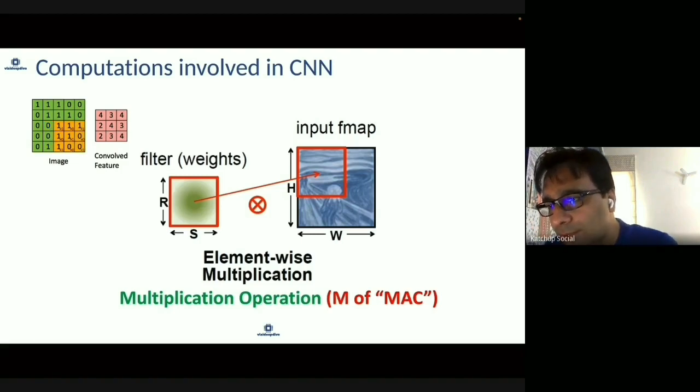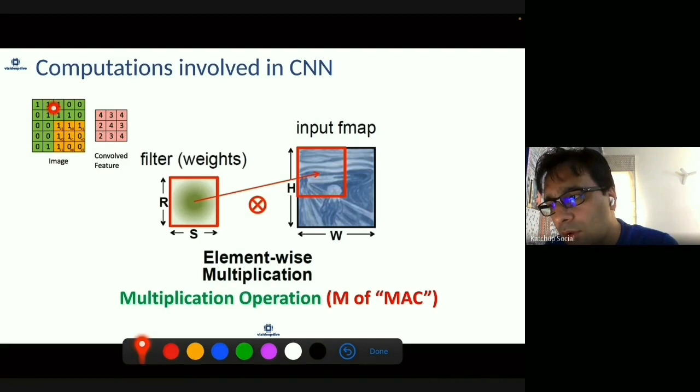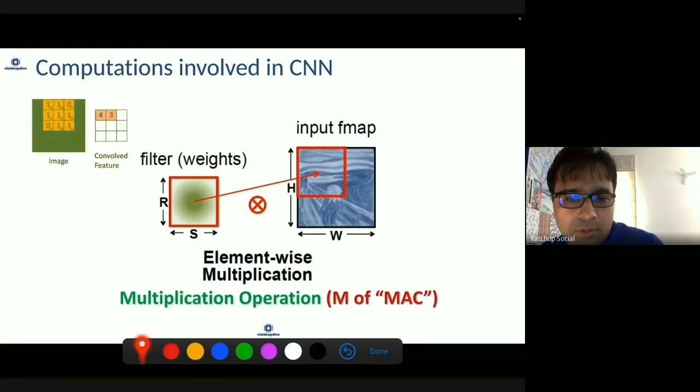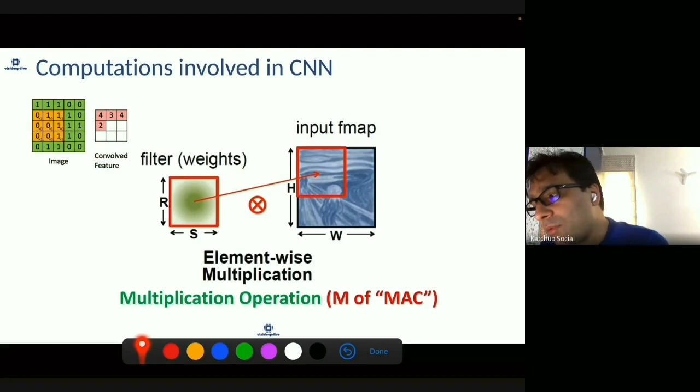You multiply row and column, then you do addition. The first part is element-wise multiplication: first row first column, first row second column. That is the M of the commonly heard term MAC. For any matrix multiplication, the first aspect is multiplication, which is element-by-element multiplication.